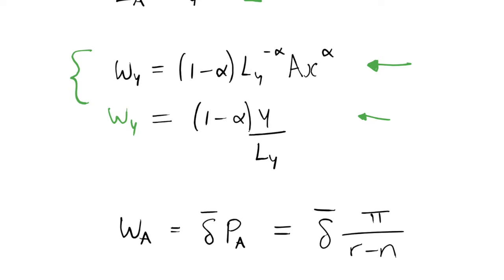Equally, we can find the wage in the R&D sector W_A, which is equal to delta-bar multiplied by the price of a patent. This comes from the marginal productivity of labour — the output in this industry is patents, which are sold to the intermediate goods sector. We also found that the price of a patent was equal to profits divided by (r minus n), so substituting that in, our wage W_A is a function of delta-bar, profits, the rental rate of capital r, and the population growth rate n.